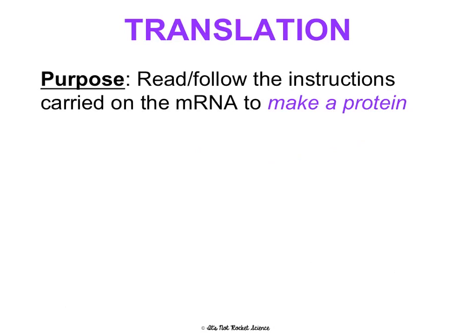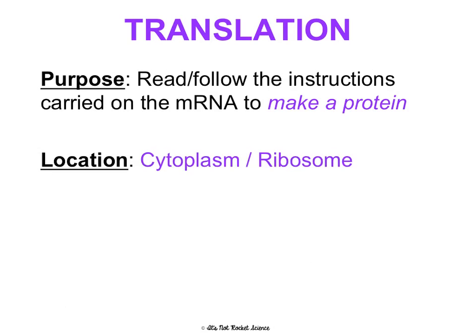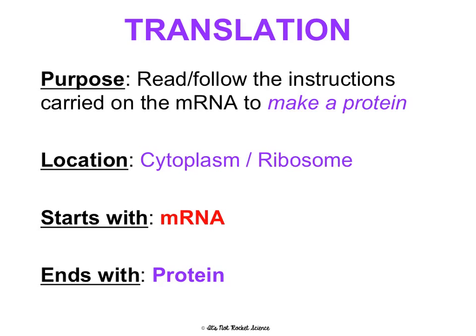The purpose of translation is to read or follow the instructions on the mRNA to make a protein. This happens in the cytoplasm, specifically in ribosomes — whether they're floating in the cytoplasm or on the rough ER. We start with mRNA and end with a completed protein.